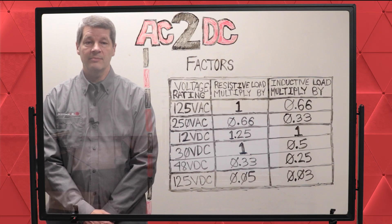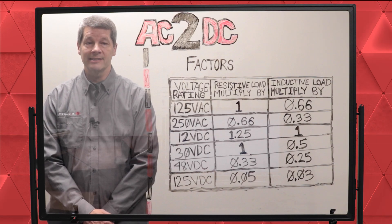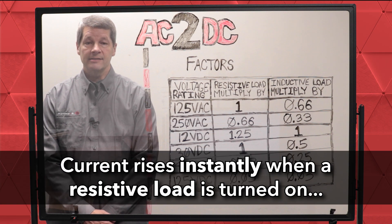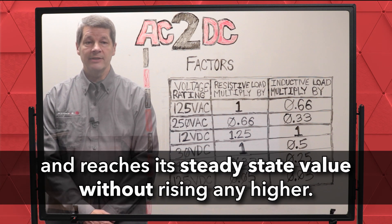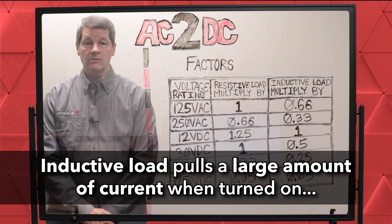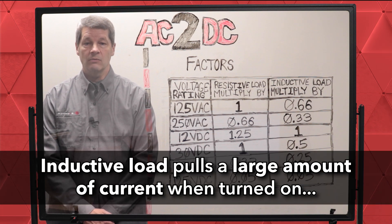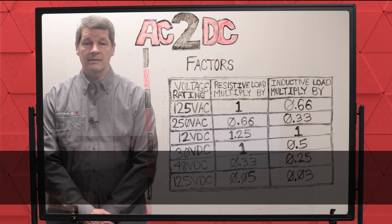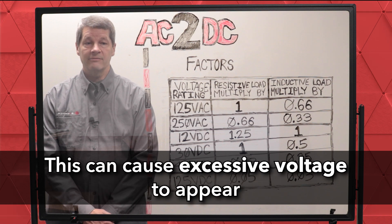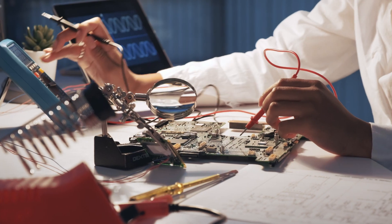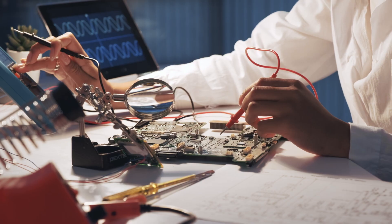Another key factor is determining if you're switching a resistive or inductive load. Current rises instantly when a resistive load is turned on and reaches its steady state value without rising any higher. An inductive load, on the other hand, holds a large amount of current when turned on before reaching a steady state value. This can cause excessive voltage to appear, so you'll need to ensure that the switch's ratings meet or exceed the circuit's requirements.